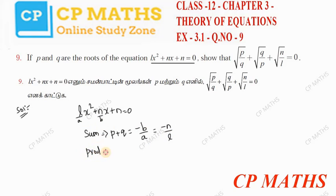Product of the roots is pq. The formula is c by a, so c by a is n, plus n by l. So sum and product of the roots we can use this.